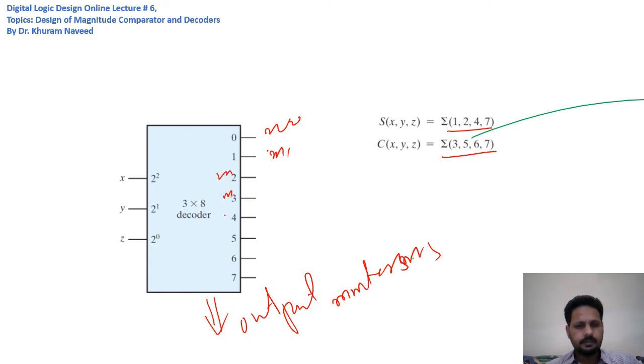m₂, m₃, m₄, m₅, m₆, m₇ - since we have min terms on the output, we can use it to implement